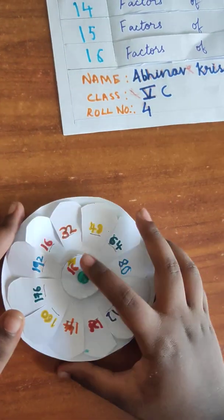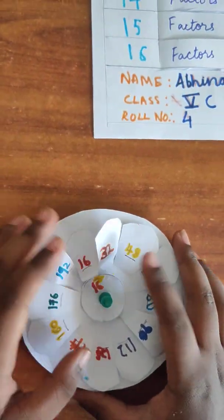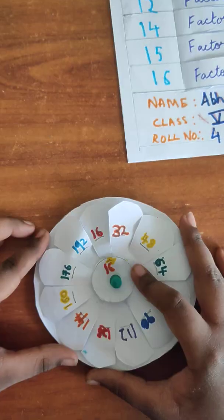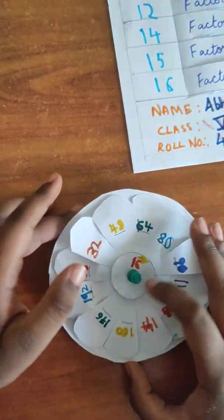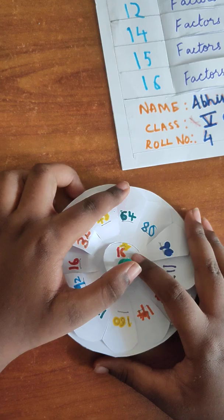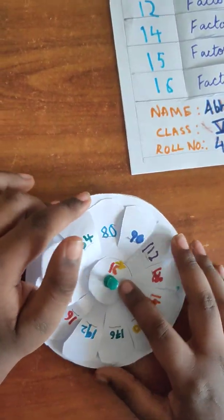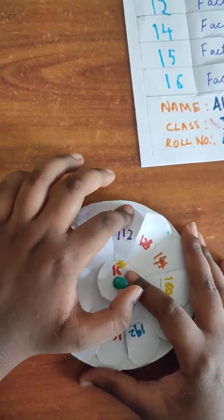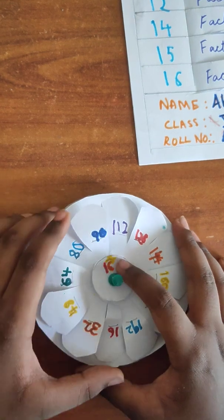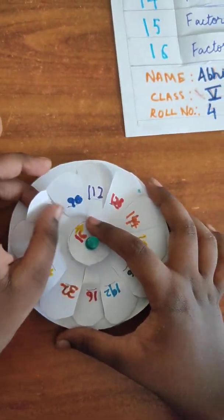First, the first number. 16 divided by 16 is 1. Now, 64 divided by 16 is 4. Now, 112 divided by 16 is 7. 160 divided by 16 is 10.